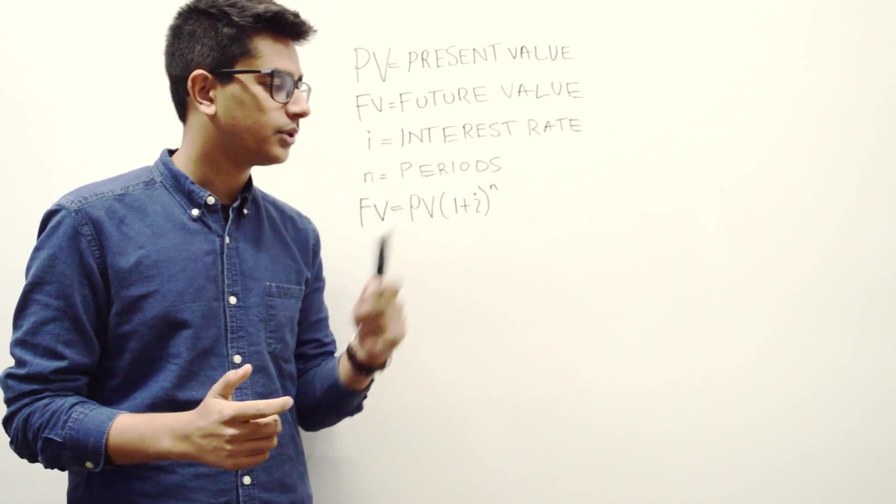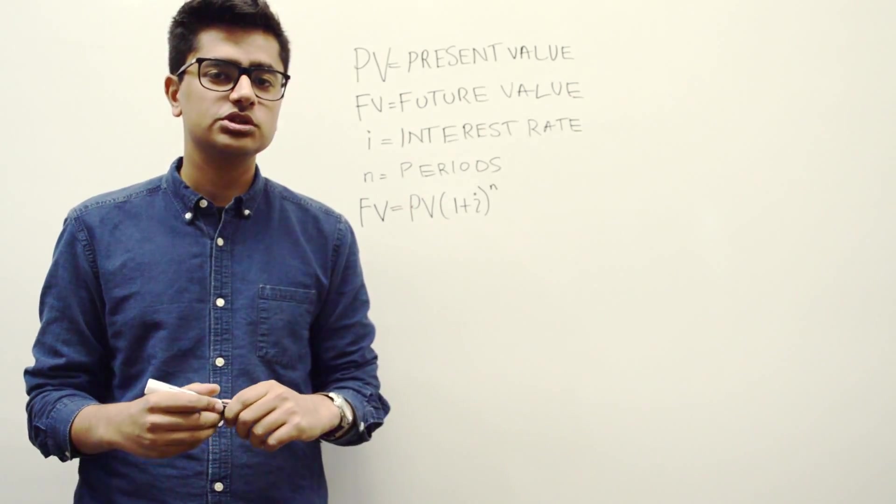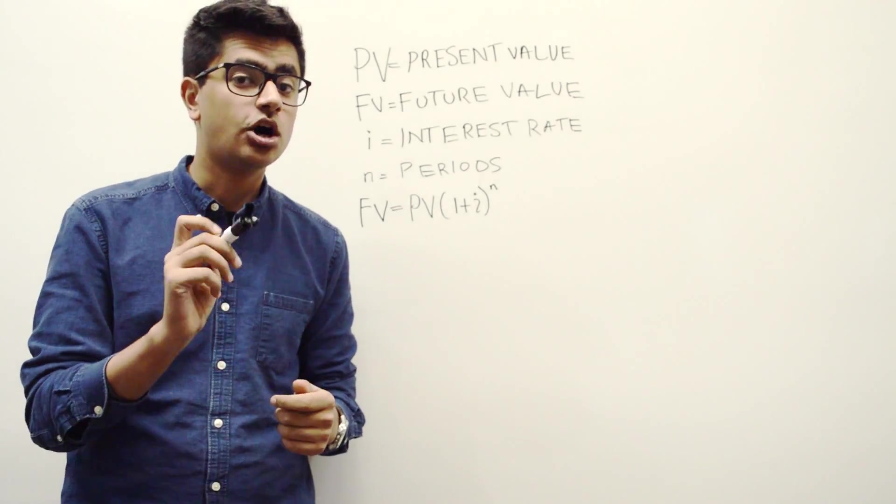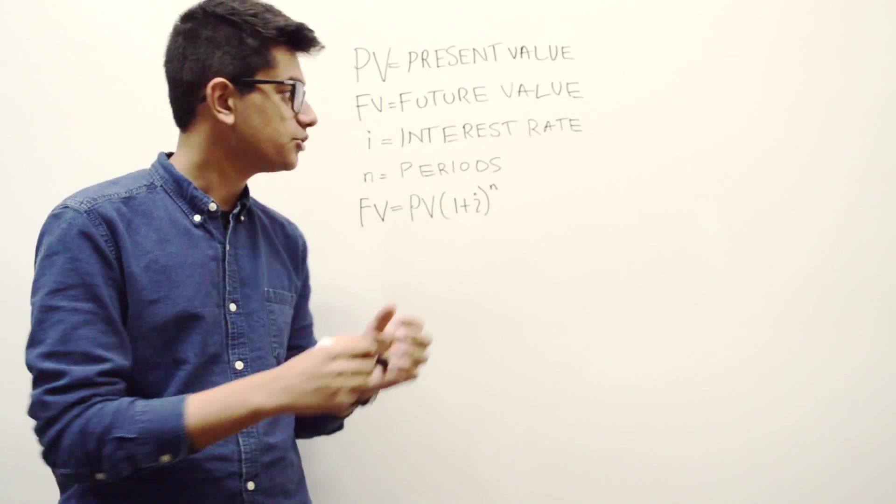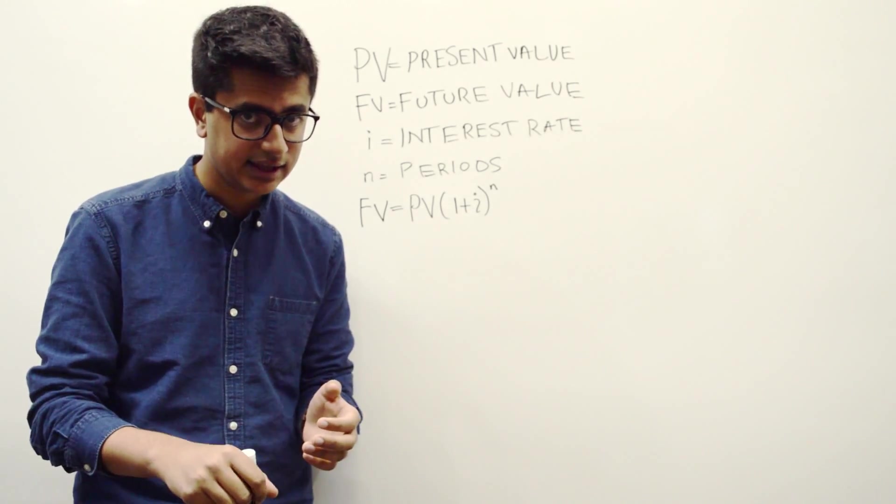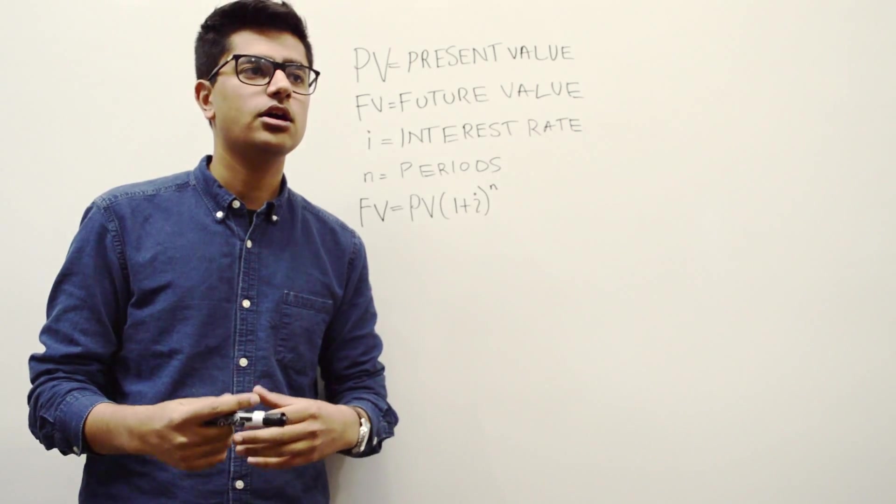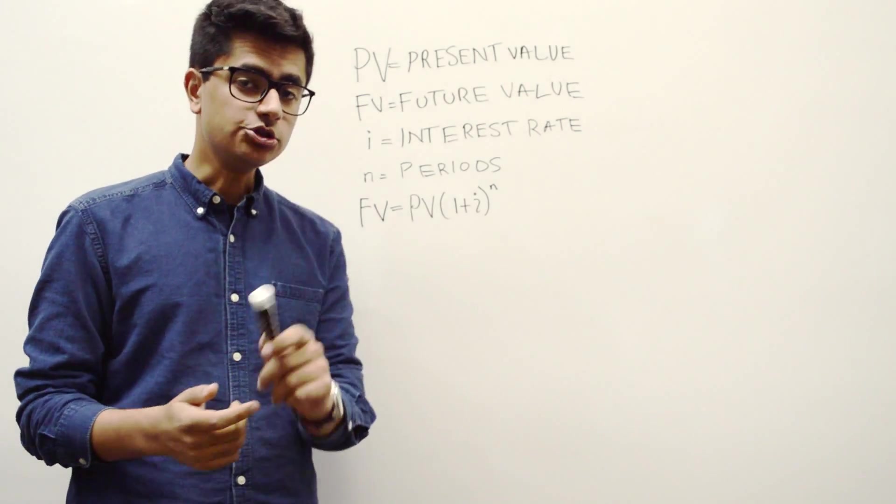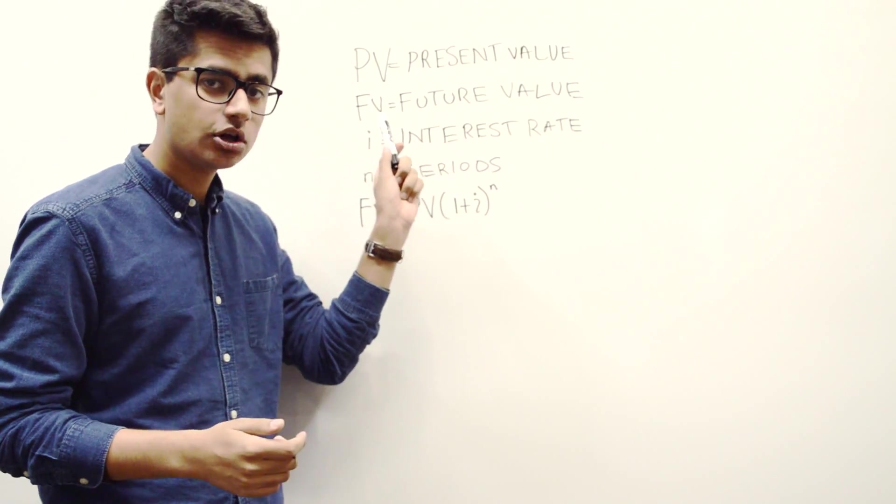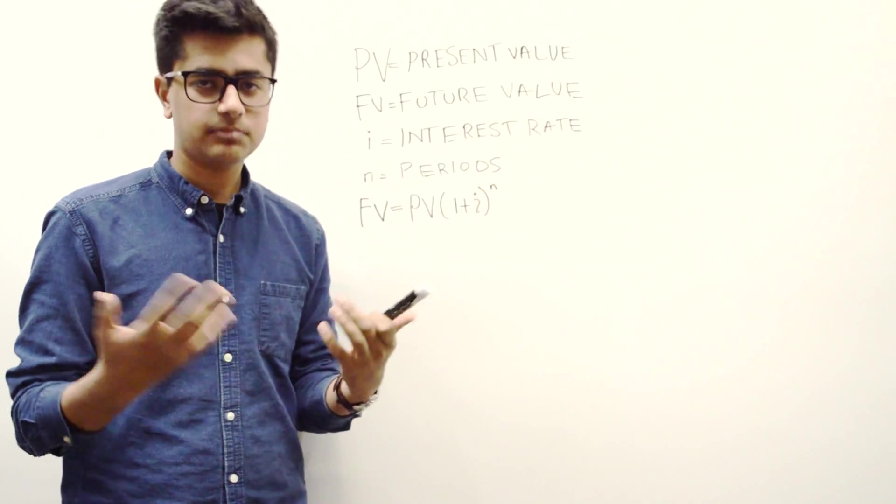In the previous example, the one I discussed in the last video, we showed that the future value of money was actually $110. As in you had $100 with you today, and after one year you actually had $110. So in the future you had $110, so the future value was $110.